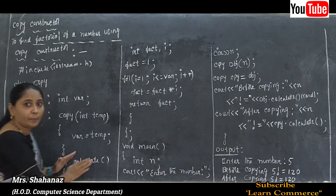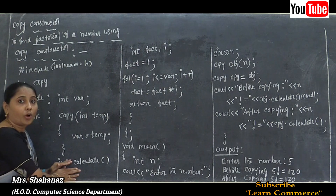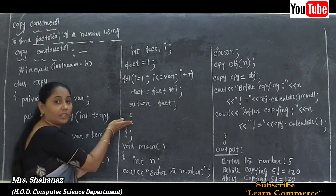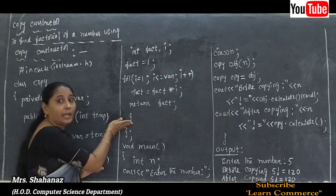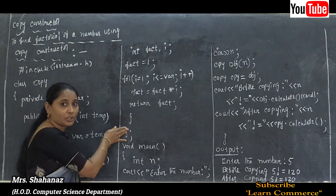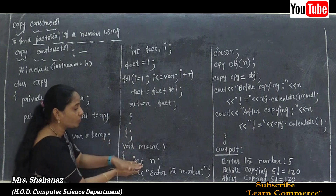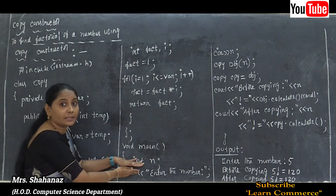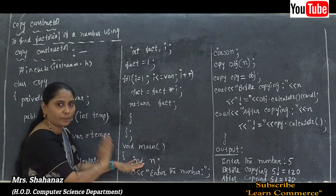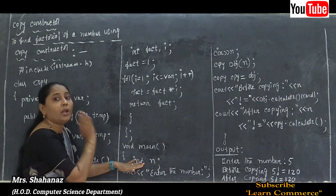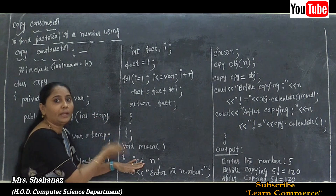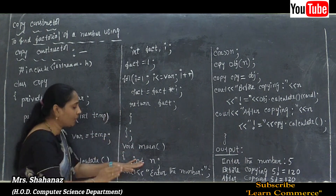If a member function is defined inside the class, it appears before the end of the class definition. If it is defined outside the class, we use the scope resolution operator and place it after the end of the class definition. Here, all member functions — both the normal function and the constructor — are defined inside the class.